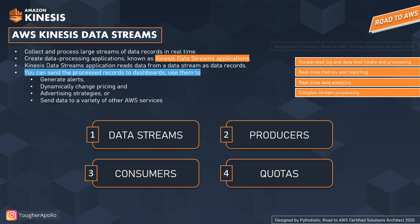Last but not least is quota. Quotas are referred to as limits and are the maximum values for the resources, actions, and items in your AWS account. Any resource you use depends on the limit or quota you are eligible for. If you want to increase the limit or quota, you contact AWS Support. For Kinesis, you can have a quota on the number of streams in an account, and you can also increase or decrease the number of shards in the stream.